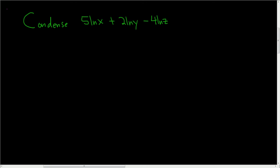We're being asked to condense the following logarithmic expression, so let's do it carefully. The plus sign here indicates that we have to use the product rule, and the minus sign here tells us that we have to use the quotient rule.